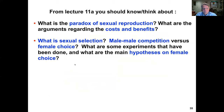From the first part of this lecture, you should be able to think about the paradox of sexual reproduction: the arguments regarding costs and benefits of sexual versus asexual reproduction, what sexual selection is, male-male competition versus female choice, and what experiments have been done and what the main hypotheses on female choice are.